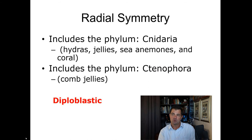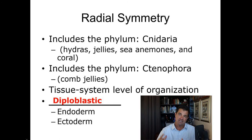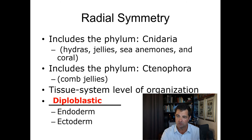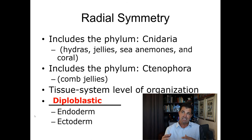We're going to talk about organisms that have what we call radial symmetry — like a wheel or circle in which you could divide the animal in many different ways and still have a right and left side. These include cnidarians and ctenophores. They have a tissue system level of organization with two tissues; they're diploblastic — endoderm and ectoderm.